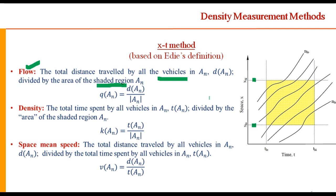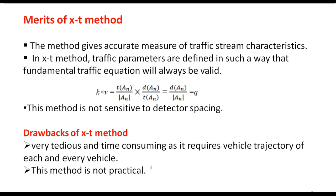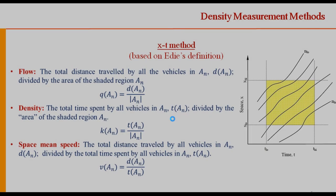Density is the total time spent by all vehicles in area A divided by the area, and space mean speed is the total distance divided by total time in the area. These definitions give a very accurate measure of traffic stream characteristics and also satisfy the fundamental equation q = k × v. This method is not sensitive to detector spacing, so the area can be of any size.